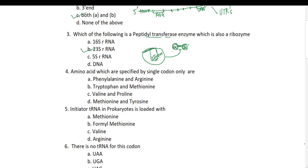Fourth question: which amino acids are specified by a single codon only? We have discussed the salient features of the genetic code. These two amino acids — tryptophan and methionine — are the only amino acids coded by a single codon. All other amino acids can be coded by more than one codon. Tryptophan is coded by UGG and methionine is coded by AUG.